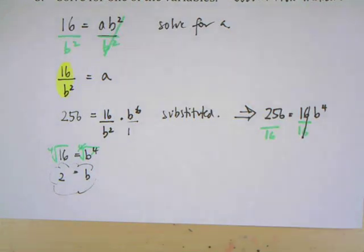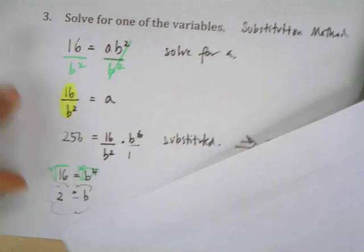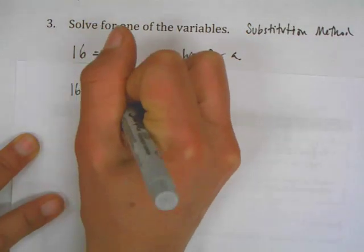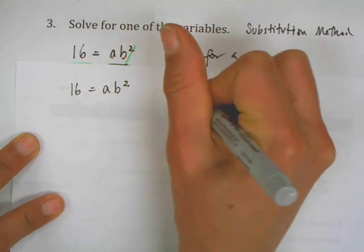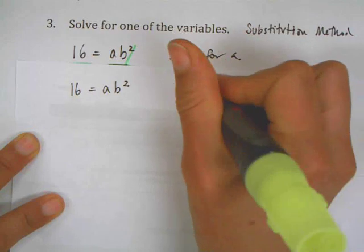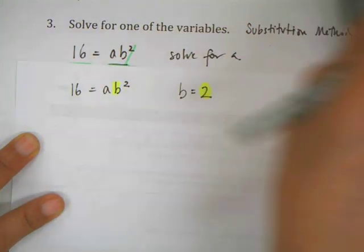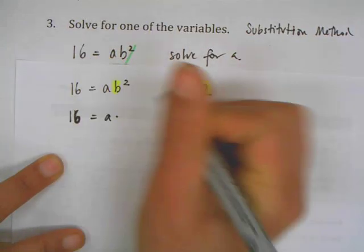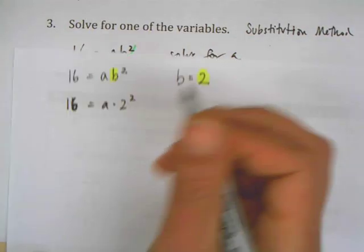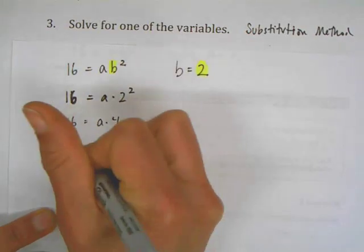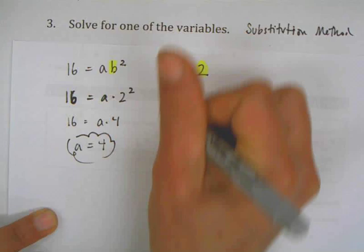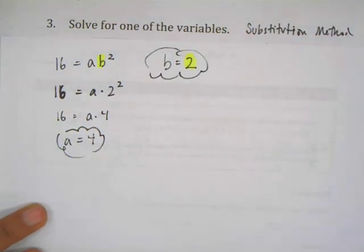Now I've got part of my problem—b equals two—but I still need to find the value of a. What I'm going to do from here is write my original equation again: 16 equals ab^2. I now know that b is equal to two, so now I'm going to substitute in that two for b. So 16 equals a times 2^2, so 16 equals a times 4. Four times 4 is equal to 16, so a is 4. Now I have my a and I have my b.